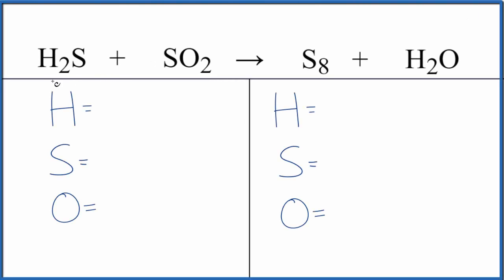So let's balance this equation here. We have H2S plus SO2. We end up with S8 and H2O. Sometimes you'll see just S here in the products. In this case, we have octosulfur. So we're going to balance this equation with octosulfur.